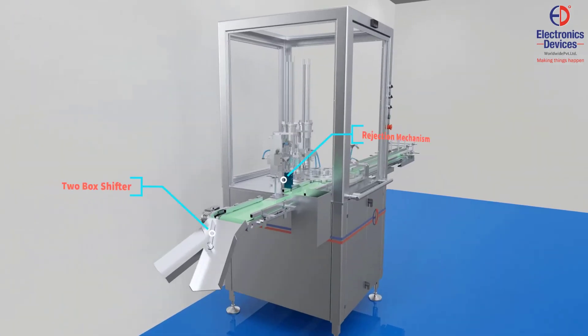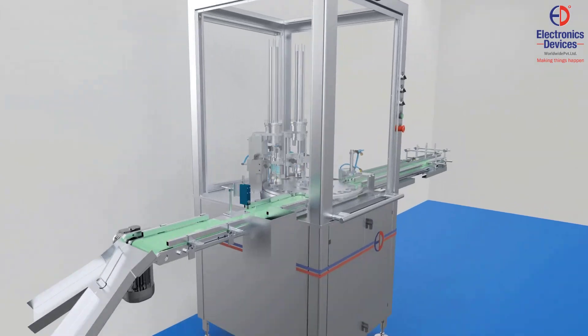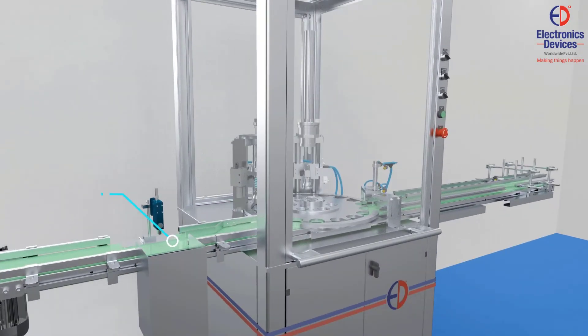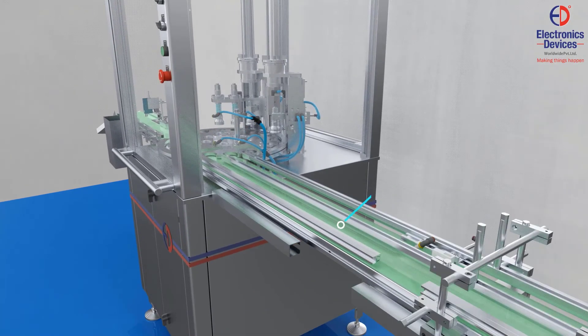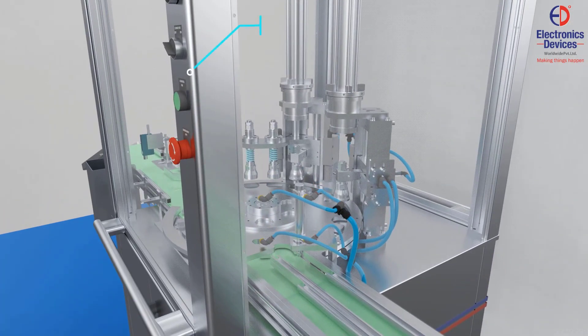The machine includes a two box shifter, rejection mechanism, conveyor motor, rejection bin, exit conveyor, in-feed conveyor, and operator panel.